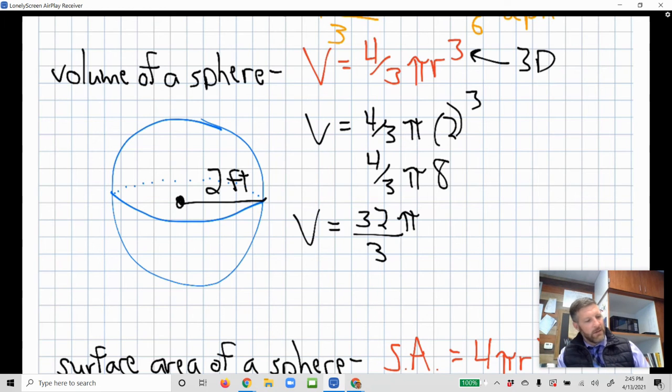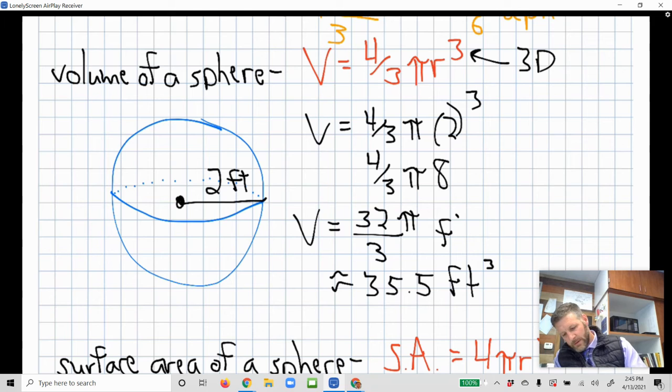And then if you want to actually leave it in terms of pi like that, or you can go ahead and make the calculations and round it to the nearest decimal. If we wanted to do that, we would get 32 times 3.14 divided by three. We get approximately 33.5 feet. And again, we're in three dimensions, so that would be feet cubed in either case.